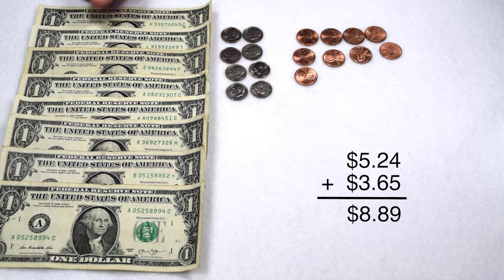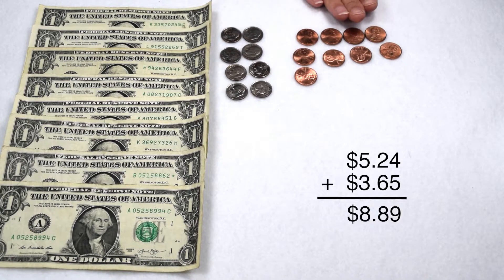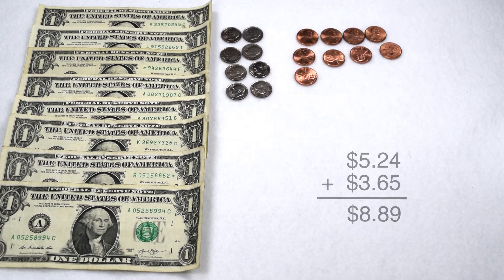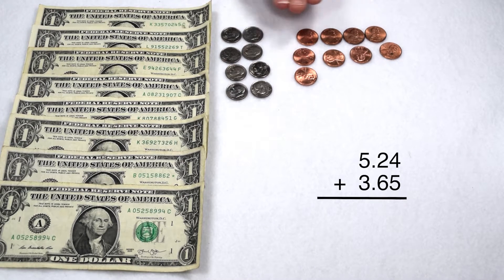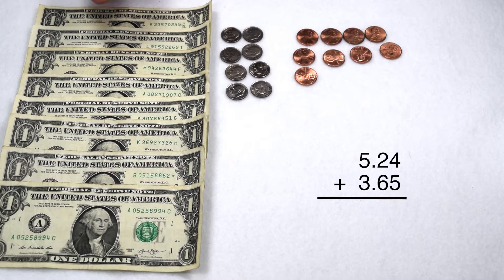When we add money, all of our dollars get grouped together, all of our dimes get grouped together, and all of our pennies get grouped together. The same could be said if we drop the dollar sign and just add with decimals. If I want to add five and 24 hundredths plus three and 65 hundredths, I would still line up my place values. My hundredths would get lined up, my tenths would get lined up with each other, and my whole numbers would get lined up with each other.